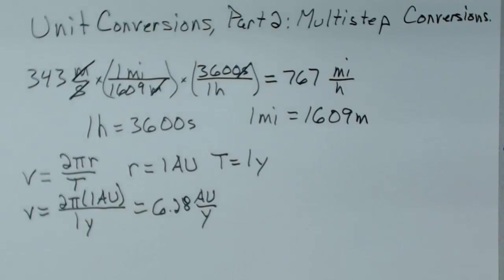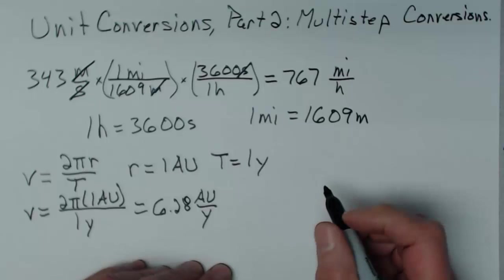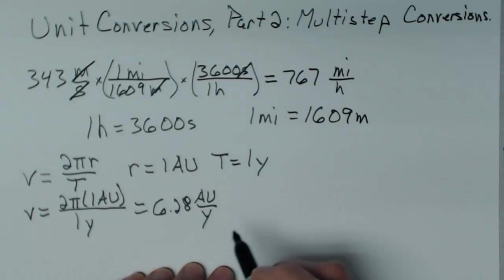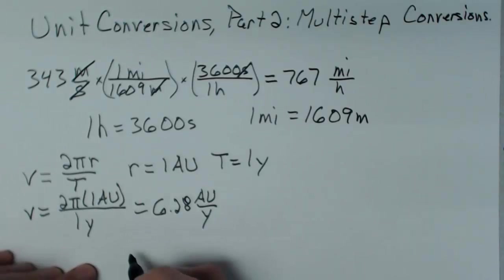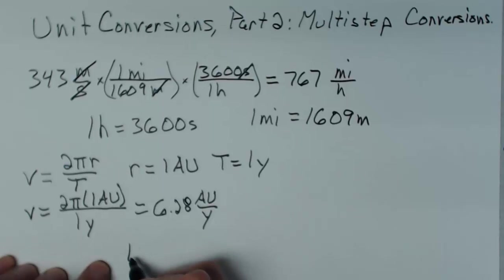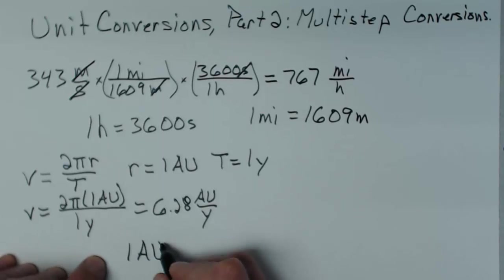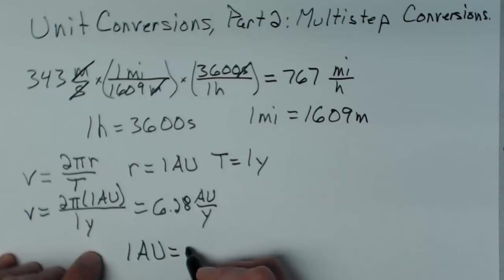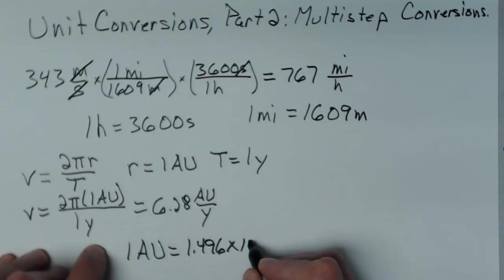But that's not particularly informative. And you may have a friend that says, well how fast is that in meters per second? So we'll figure that out in meters per second. To do that, I have to know a couple of conversions. One thing I have to know is that one astronomical unit is equal to 1.496 times 10 to the 11th meters.